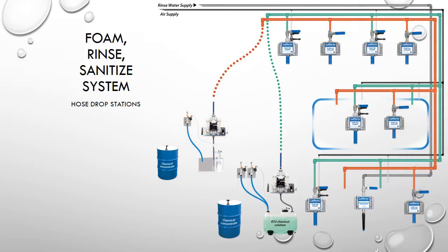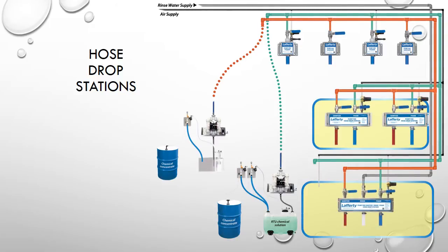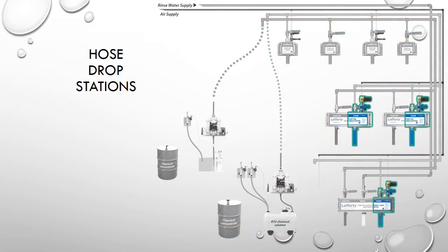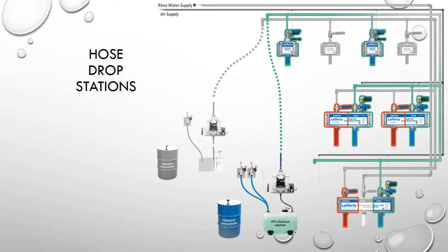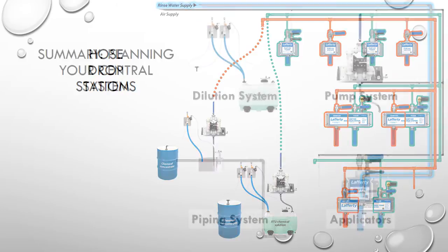For some facilities, individual foamers, sanitizers, and rinse stations are replaced by convenient multi-function hose drop stations. These hose drop stations include a foam applicator and a sanitizer applicator. The foamer connects to the foam cleaning central system, and the sanitizer connects to the sanitizing central system. When a hose drop station includes a rinse station, it connects to the plant water supply line.